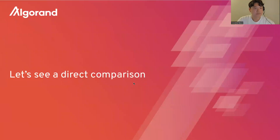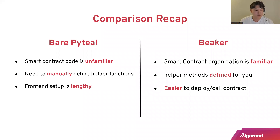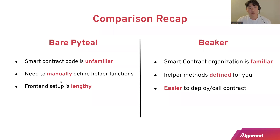Let's recap what we saw. With PyTeal and the Algorand SDK: the smart contract code was unfamiliar, the router class was very unfamiliar to those coming from Web2, you had to manually define helper functions for deployment and interaction, and the frontend setup was very lengthy. With Beaker: smart contract organization is very familiar — just set up a Python class and define your functionality methods. The helper methods that you had to define manually before are provided for you out of the box, and it's much easier to deploy and call your smart contract.